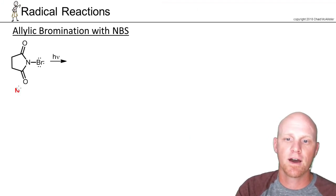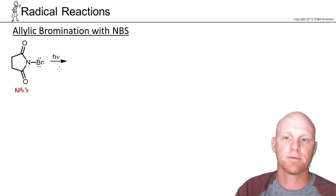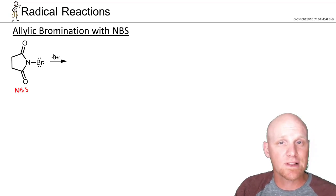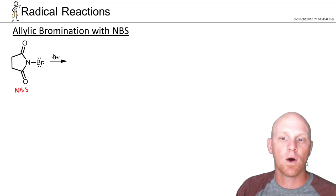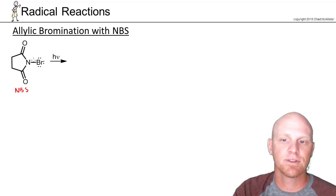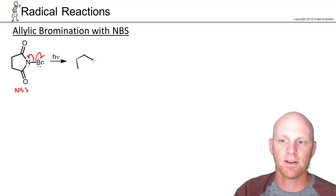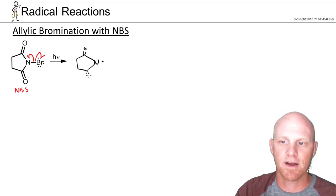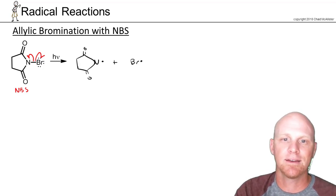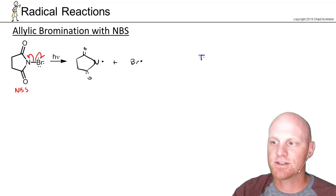Here we have our molecule of NBS, N-bromo-succinimide. We hit it with light — though we can also use heat or a radical chain initiator like a peroxide. We use just the right energy of light to result in this bond breaking homolytically, one electron to each side. We end up with a nitrogen radical, stabilized by resonance, and also a bromine radical. This is your initiation step.